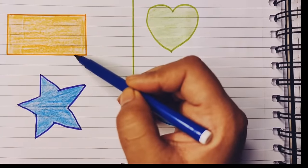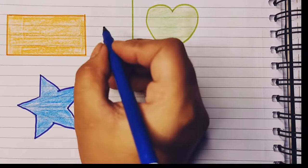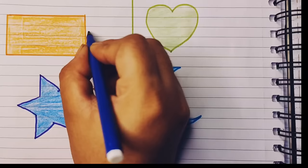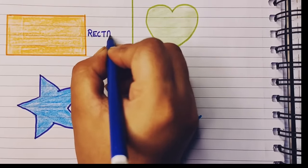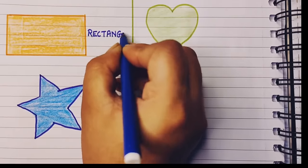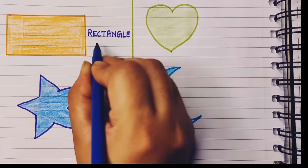The next shape also has four sides and four corners. In this, two opposite sides are equal and one side is longer than the other. It is a rectangle: R-E-C-T-A-N-G-L-E, rectangle.